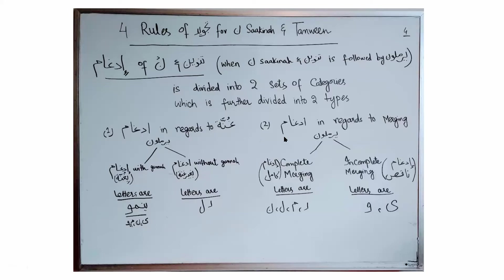The other way to divide Idgham is in regards to Marjin. When Yermalun letters are divided in regards to Marjin, there are two types: either Complete Marjin (Idgham Kamil) or Incomplete Marjin (Idgham Naqis). This concept of Idgham Kamil and Idgham Naqis will be used in every kind of Idgham — whenever Idgham happens, we will discuss whether it is complete or incomplete merging.